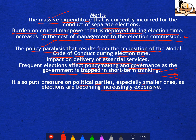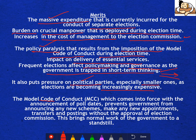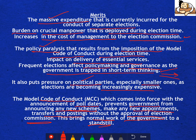Frequent elections also puts pressure on political parties, especially the smaller ones, because elections are increasingly expensive. The Model Code of Conduct, which comes into force with the announcement of poll dates, prevents the government from announcing any new schemes, making new appointments, or transfers and postings without Election Commission approval. This actually brings normal work to a standstill. If simultaneous elections happen, all this won't occur — that'll be a huge benefit.